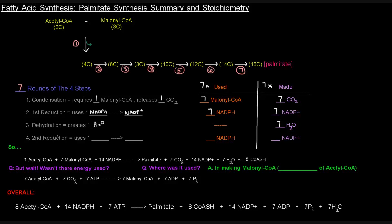And the second reduction, as far as what it uses and what it creates, is identical to the first reduction. So we have NADPHs there, and then NADP-plus here, so seven and seven, just like it was for the first reduction.